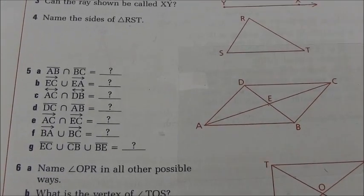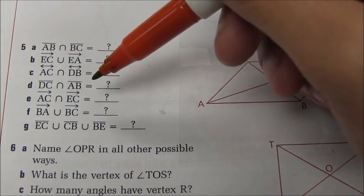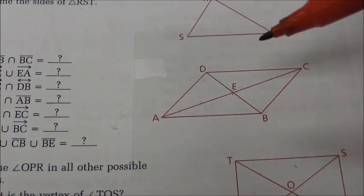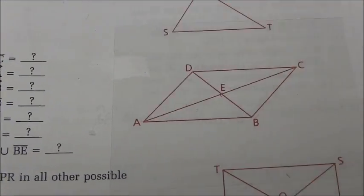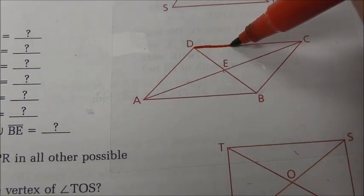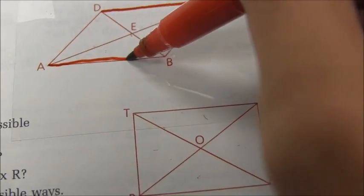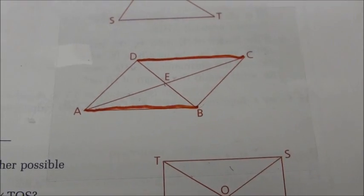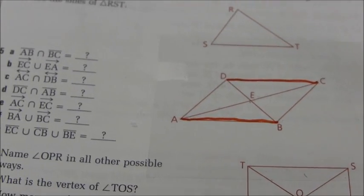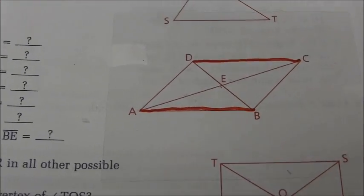Time to move on to part D. In part D we have the intersection of segment DC with segment AB. Remember, the intersection is the overlap of those two segments. But if you take a look here, DC is right here, AB is down here at the bottom. Those are segments, they're not lines. They appear to be parallel. We don't know that they're parallel, but in this case it doesn't matter - they don't overlap anywhere. It means there's no solution, there is no intersection.